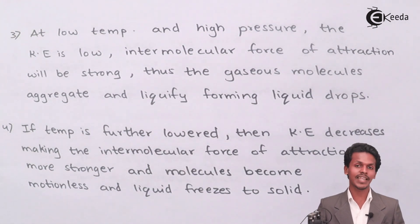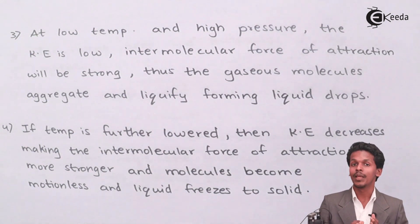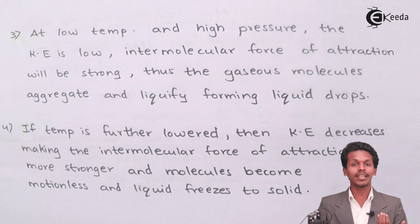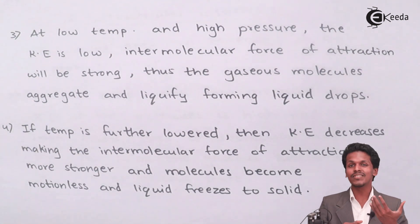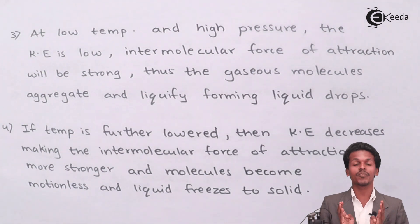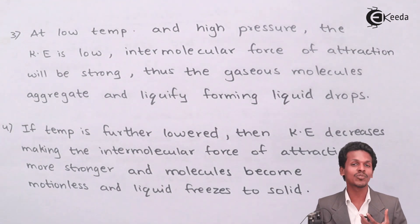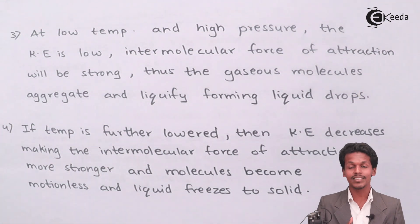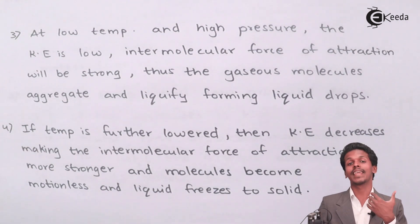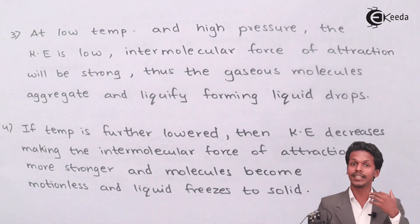For example, suppose H₂O is present in a gaseous state. If we decrease the temperature, the gaseous molecules will interact with each other and come close because the volume is reduced. The intermolecular distance decreases and the intermolecular force of attraction increases. If the intermolecular force of attraction increases, the volume decreases, the molecules aggregate, and the gas starts to liquefy — liquid drops are formed.